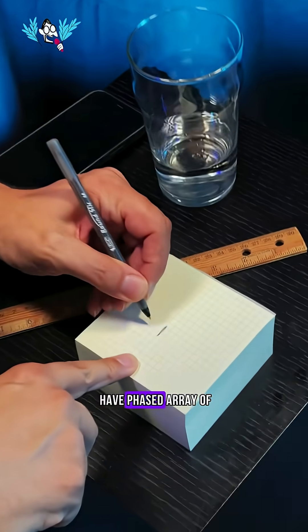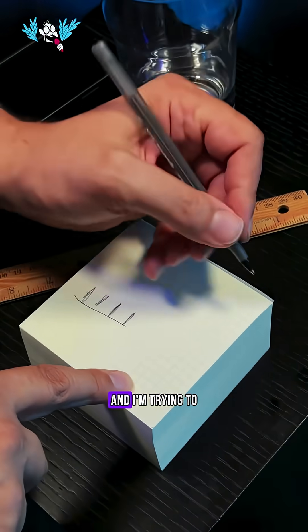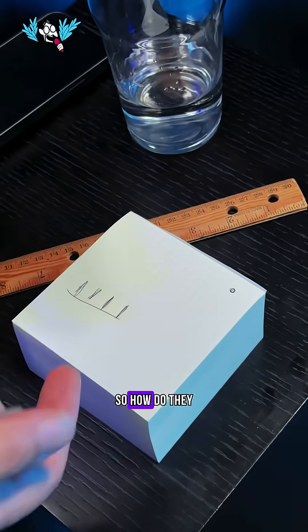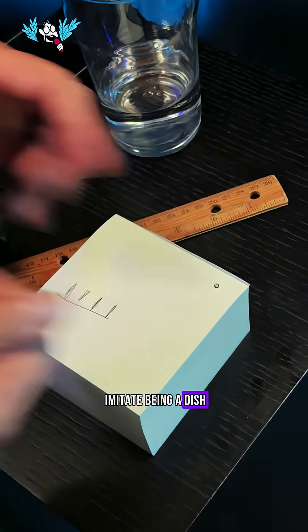So let's say you have a phased array of four antennas, and I'm trying to listen to some radio up here. So how do they imitate being a dish pointed at that?